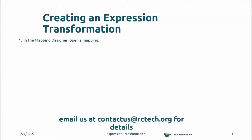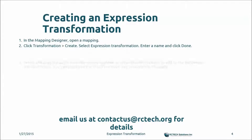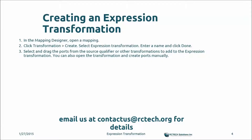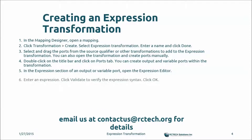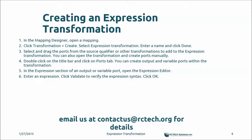Creating an expression transformation is straightforward. First, define a mapping in the mapping designer, then pull in the source qualifier transformation. Create the expression transformation, drag ports from the source qualifier into it, then make changes by double-clicking a port. You can add custom ports or modify existing ones using the expression editor, verify the syntax, and assign the data type, port precision, and scale.